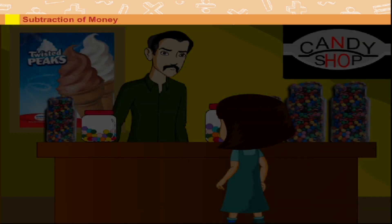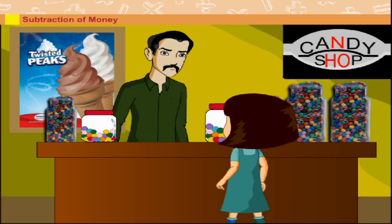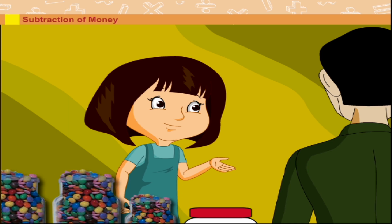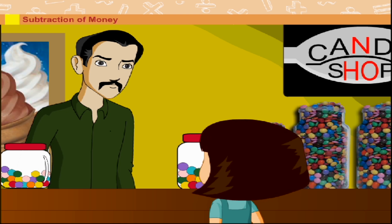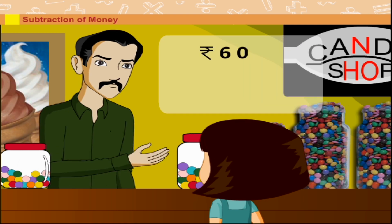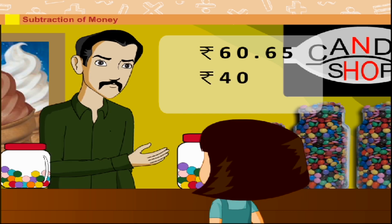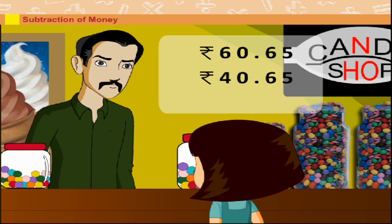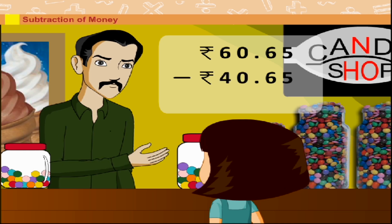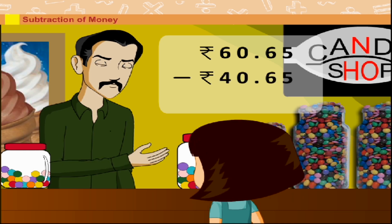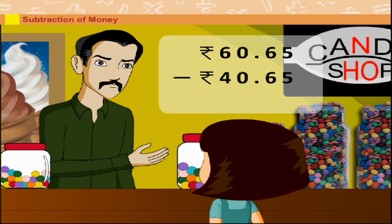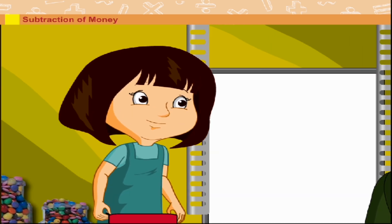Subtraction of Money: Neha asked the shopkeeper, 'How much did I pay you for 10 candies?' The shopkeeper replies, 'You had Rs. 60.65. Now you have only Rs. 40.65. Just subtract Rs. 40.65 from Rs. 60.65 to find the amount of money you paid me.'